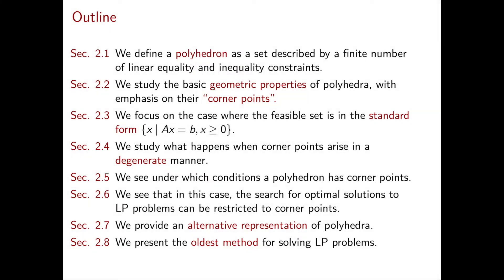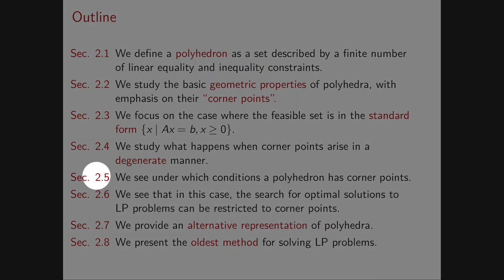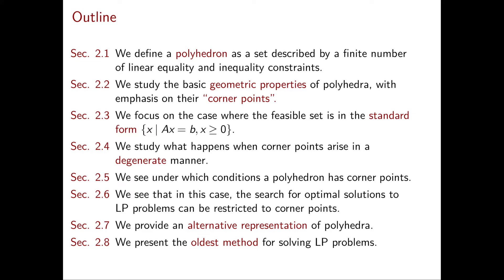In section 2.4 we will understand that corner points may arise in a degenerate manner. In section 2.5 we will give conditions under which a polyhedron must have corner points. In section 2.6 we will see that an optimum solution can always be found among the corner points. In section 2.7, corner points give an alternative representation of polyhedra. Finally, in section 2.8 we see the oldest method for solving linear programming problems — geometrically interesting but not very effective in practice.